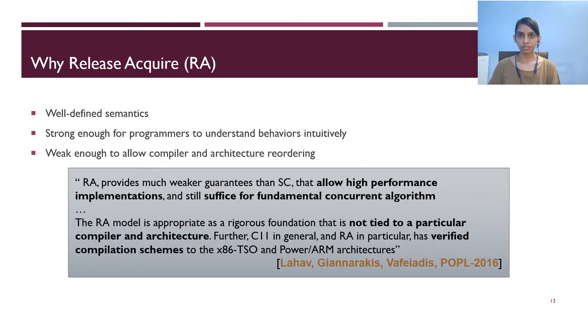To answer why RA memory model, we can note the following points. First, the RA memory model has a well-defined semantics. Second, as we saw with the message passing example, the RA memory model provides strong guarantees that enable programmers to understand behaviors intuitively. Third, the RA memory model allows some weak behavior as we saw with example IRIW. It enables compilers and architectures to reorder instructions for better optimization.